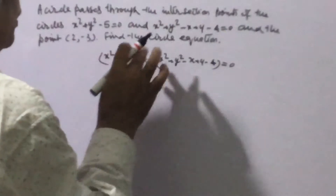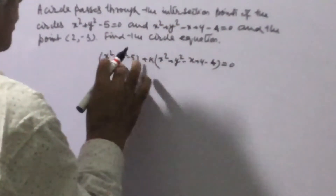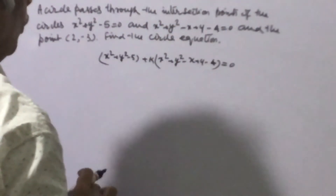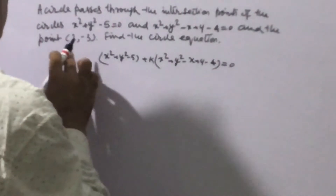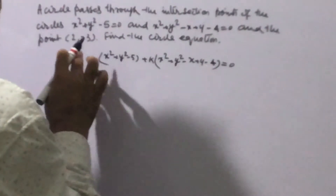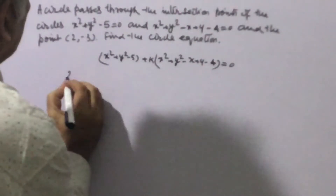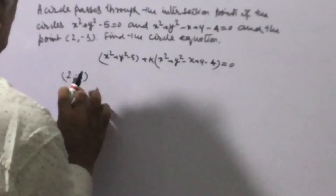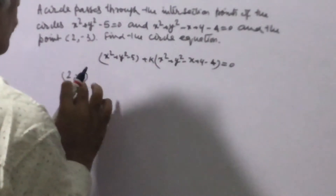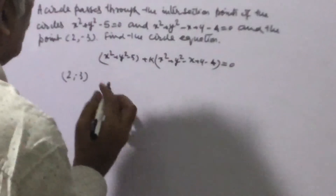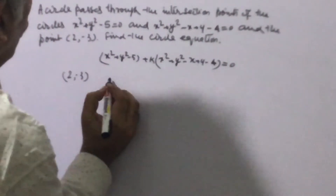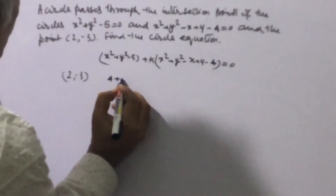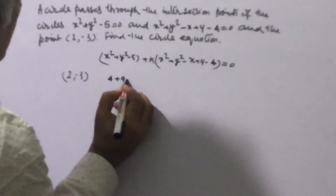Now we are given that this circle passes through the point (2, -3). So putting x = 2 and y = -3 into this equation, we get: 2² = 4 and (-3)² = 9, so 4 + 9 - 5, plus k times (4 + 9 - 2 - 3 - 4) = 0.